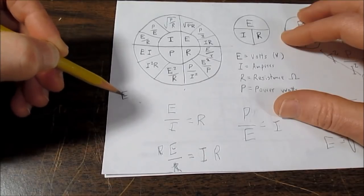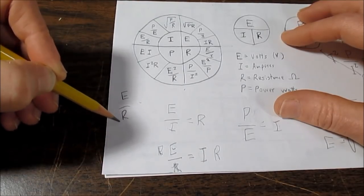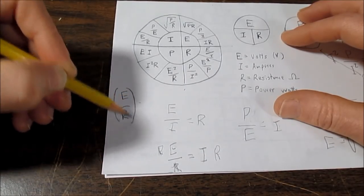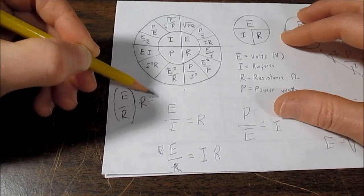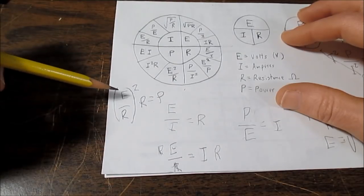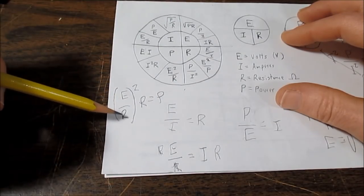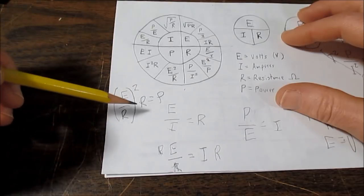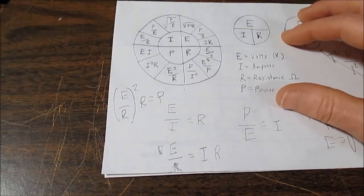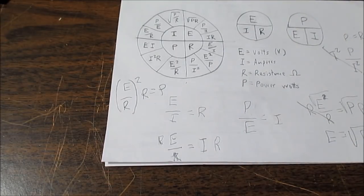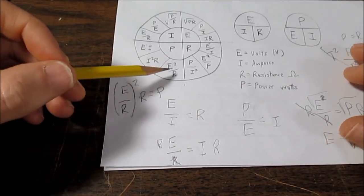So if E over R equals I, we can just plug that in where I was. And it's squared, multiplied by R equals P. So you just take your voltage over resistance, square it, then multiply that result by R, and you got power. So that's kind of a way to come up with an answer if you forget a formula.